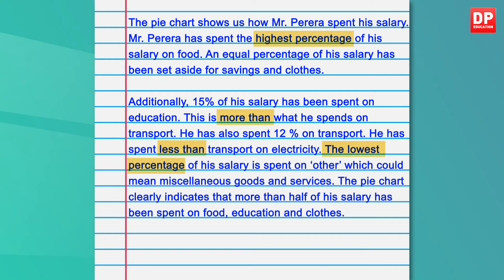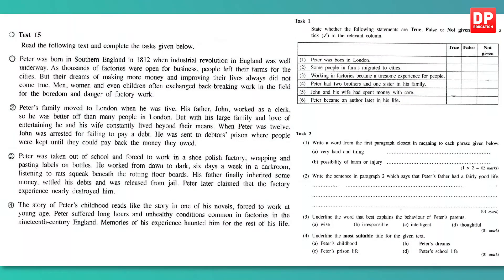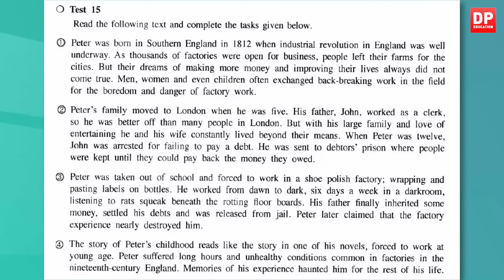Always refer to the guidelines and points given in your question. Let's now move on to Test 15. You are given a small description of Peter — this is a comprehension passage, and unlike the shorter comprehension passages in Paper 1, this carries 8 marks. Let's read the passage together.